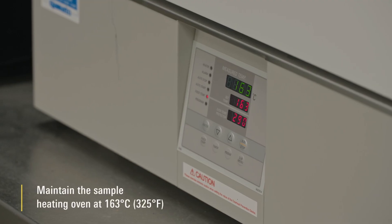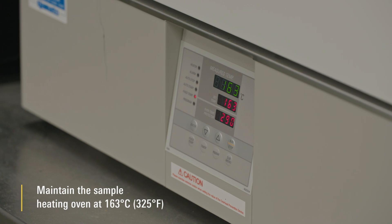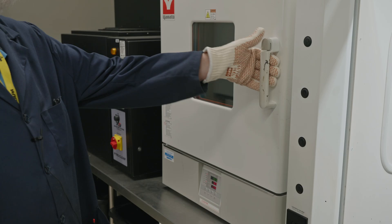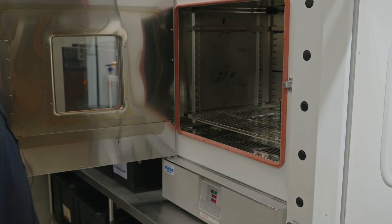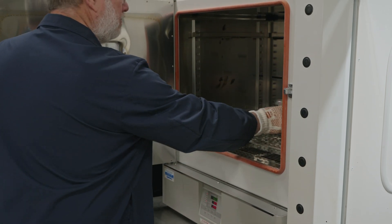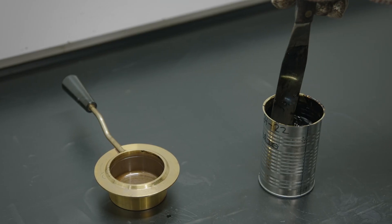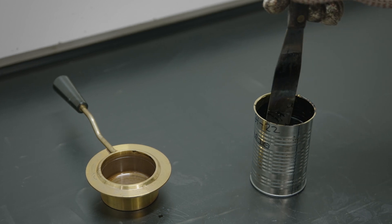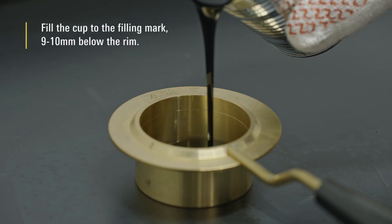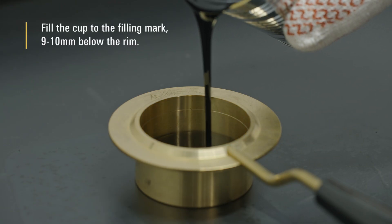Maintain the sample heating oven at 163 ºC. Heat the sample in a container with a loosely fitted lid for the minimum time necessary to completely liquefy the sample. Manually stir the sample without incorporating air bubbles. Fill the cup to the filling mark 9-10 mm below the rim.